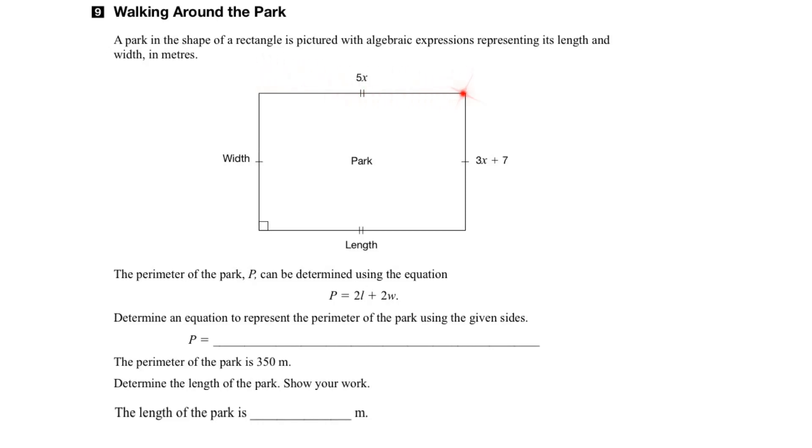In this question, we're given a diagram to represent the shape of a park which is a rectangle, and we're given algebraic expressions to represent the length and the width of the rectangle. We're also given a formula for the perimeter of the park, and then we have to determine the equation of the perimeter.